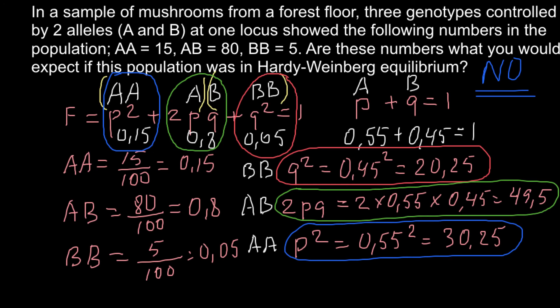We can always check our answer. When we add all three expected genotype frequencies — 0.2025 + 0.495 + 0.3025 — we should get 1 according to the formula. Likewise, when we add the observed genotype frequencies, we also get 1. This confirms that our calculations are correct.